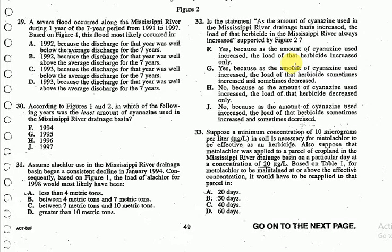The statement is: as the amount of synesine used in the Mississippi River drainage basin increased, the load of that herbicide in the Mississippi River always increased — supported by Figure 2. We can see there are a few strong keywords here: 'always increased,' and 'as the amount of synesine used in the Mississippi River increased.' So we're looking at a very strong relationship.